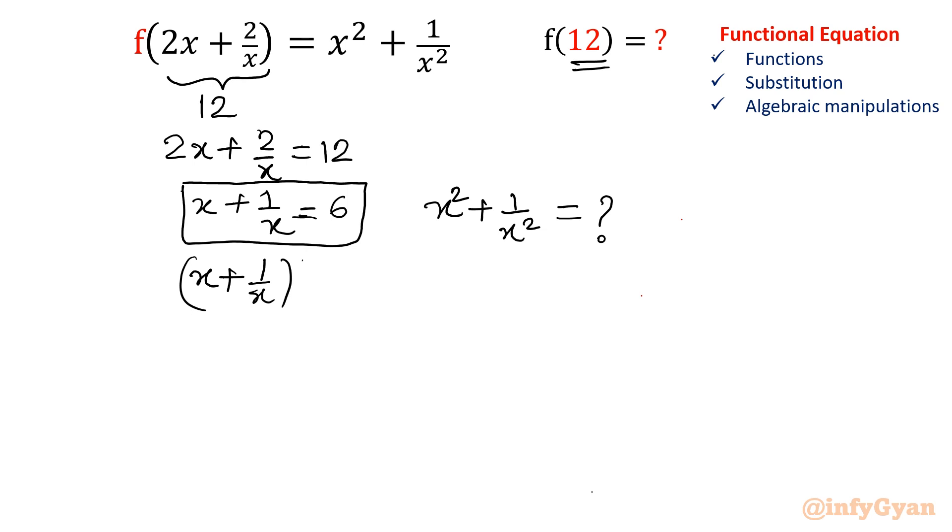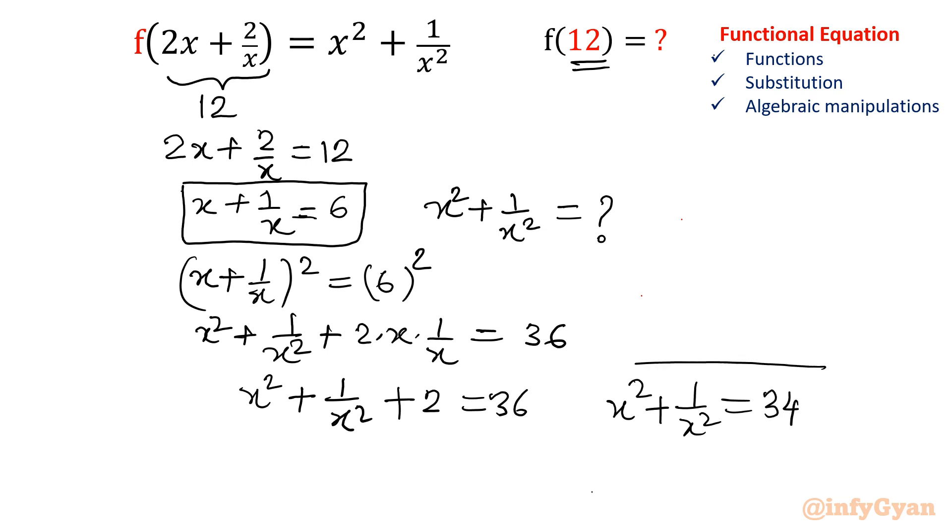So let me write one more time. (x + 1/x)² = 6². So x² + 1/x² + 2 times x into 1/x that will get cancelled out equal to 36. So our answer is there in 2 minutes. x² + 1/x² + 2 = 36. And then we will write our answer: x² + 1/x² = 34. Simple.